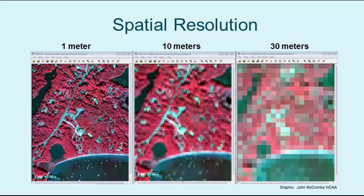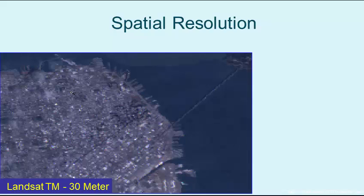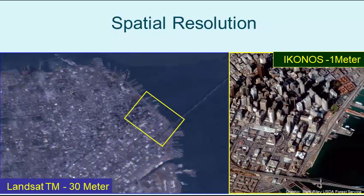Simply put, it is easier to detect specific landscape features such as roads and houses on the 1 meter image than it is on the 30 meter image. The same type of comparison can be witnessed when examining this 30 meter Landsat image of San Francisco compared to a 1 meter Ikonos image of the downtown area.